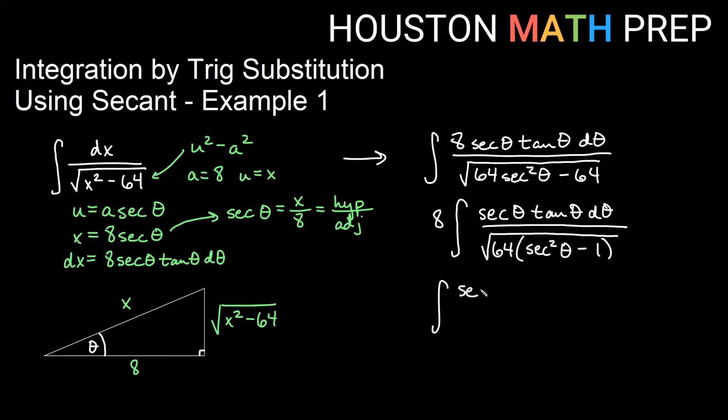And we will simply get the integral of secant theta tan theta d theta over the square root of, now this identity, secant squared theta minus 1, we're going to go ahead and change that into a single term and call it tan squared theta.